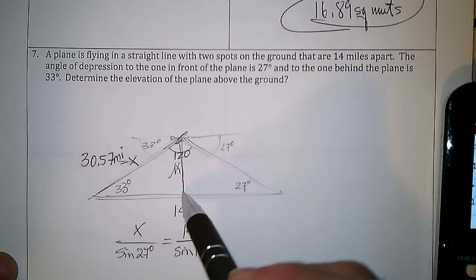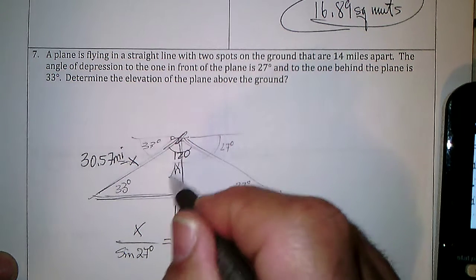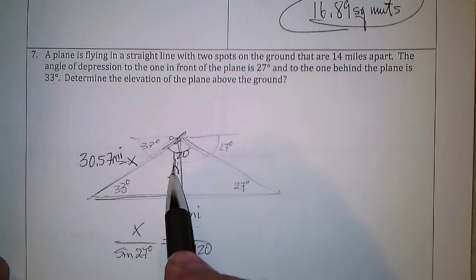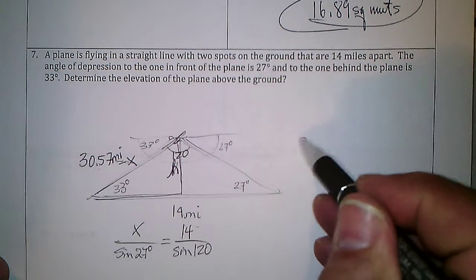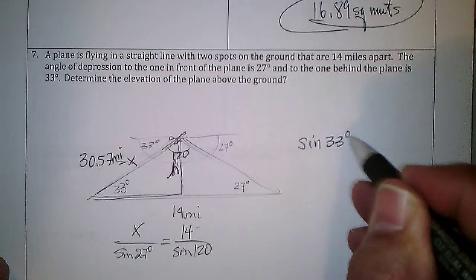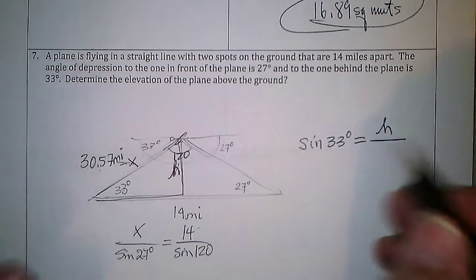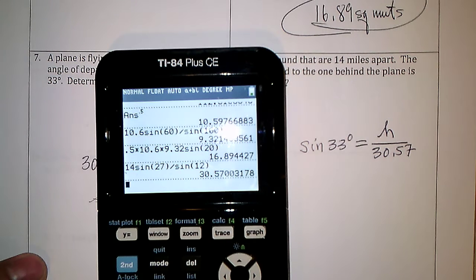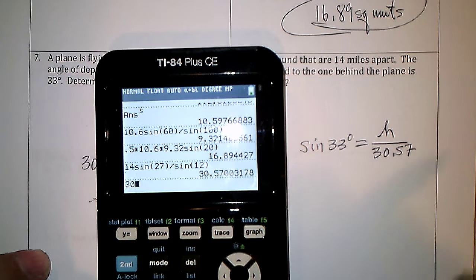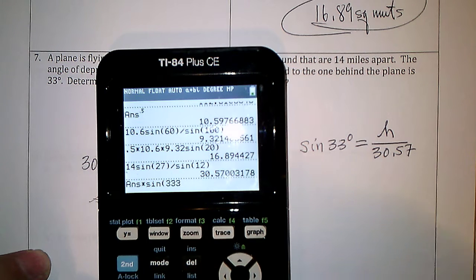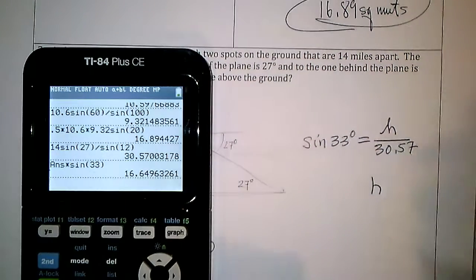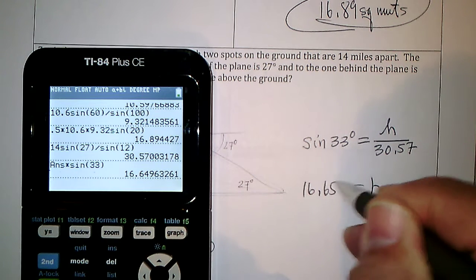Now I can use the right triangle to find the height. This slant side is the hypotenuse and the height is the opposite side, so sine of the angle equals opposite over hypotenuse. Multiplying by 30.57: 30.57 × sine(33°) gives the height the plane is flying at as 16.65 miles high. That is really high — most planes can't fly that high; this must be some sort of spacecraft.